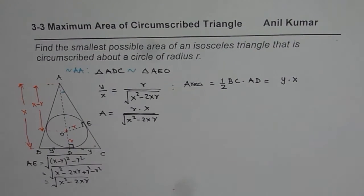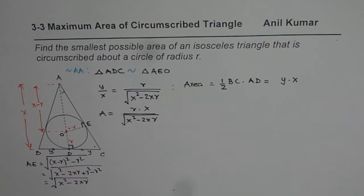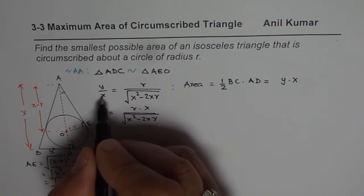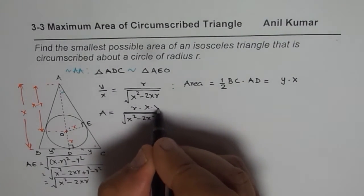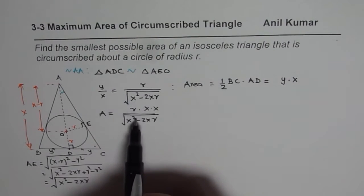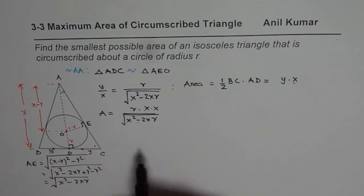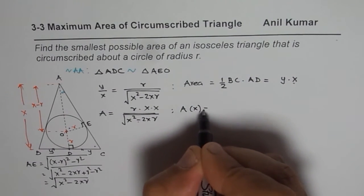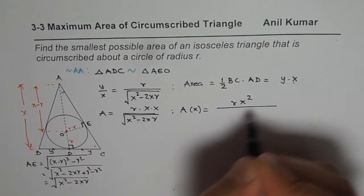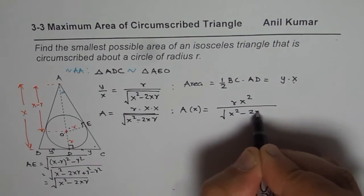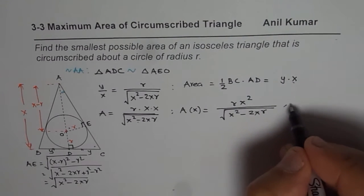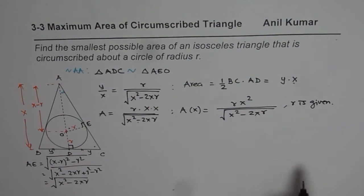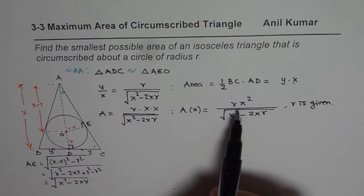To find the minimum area, we need to find the derivative and set it equal to zero. We apply the quotient rule, where the denominator squared will be X² minus 2XR. The derivative of the numerator RX² is 2XR. So we write 2XR times the square root of X² minus 2XR, minus RX² times the derivative of the denominator, which is half of (X² minus 2XR) to the power of negative one-half, times (2X minus 2R). R is constant.